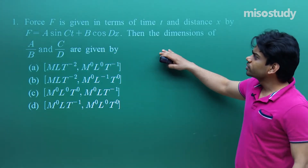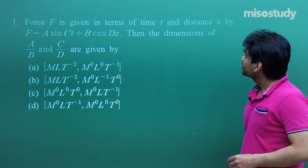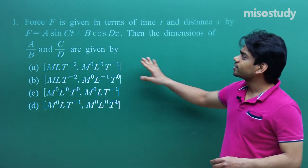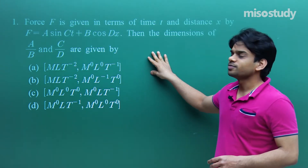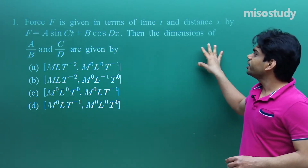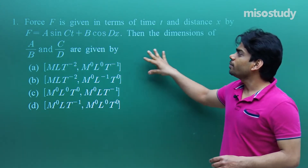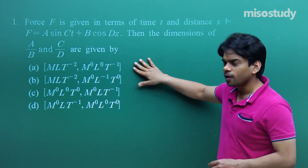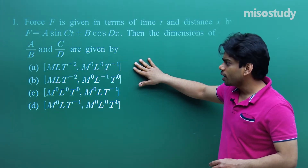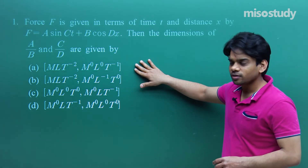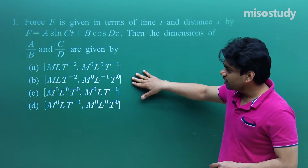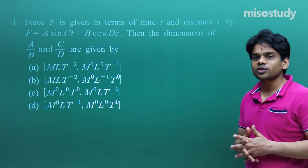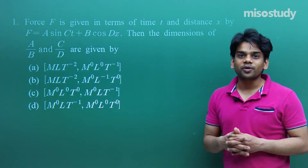Force F is given in terms of time t and distance x by F = a·sin(ct) + b·cos(dx). Then the dimensions of a/b and c/d are given by option A: MLT⁻², M⁰L⁰T⁻¹; and other options B, C, D. We have to check which option matches our response.